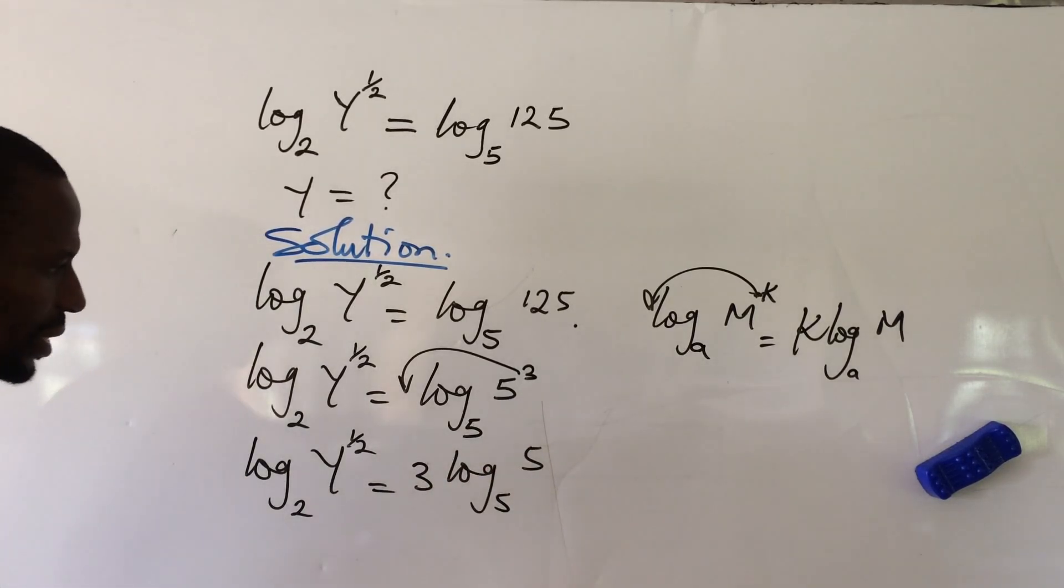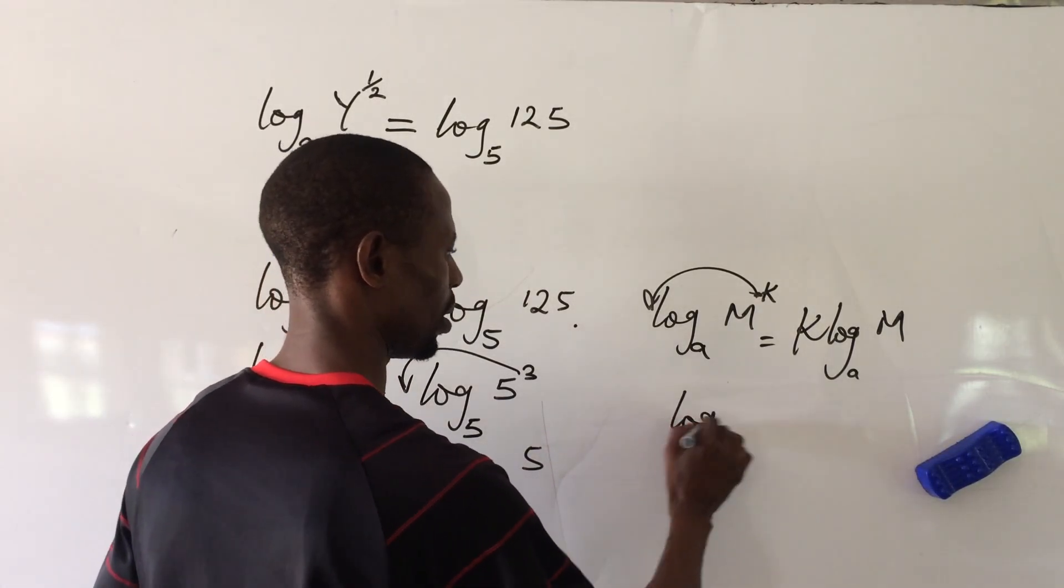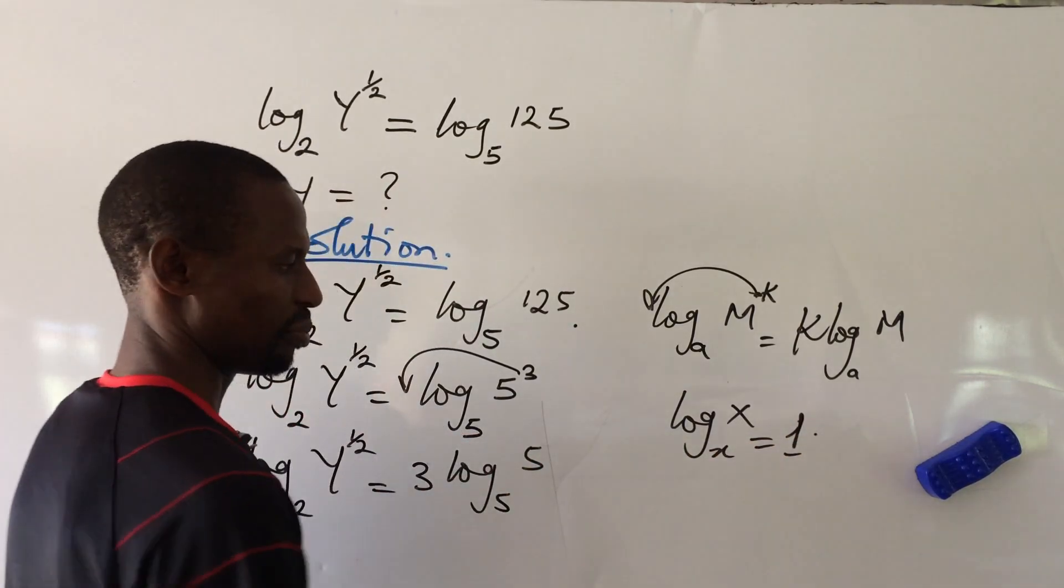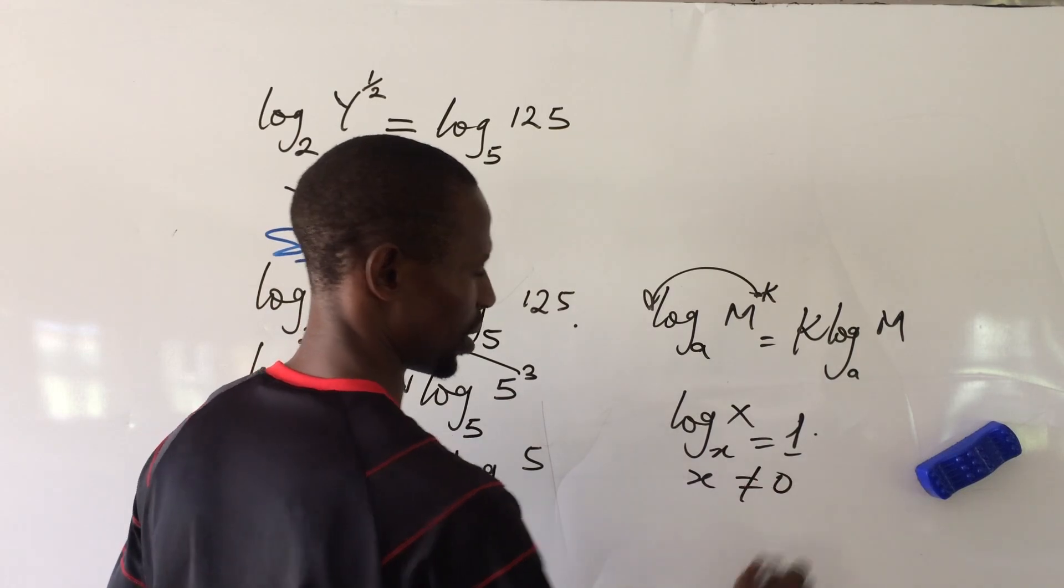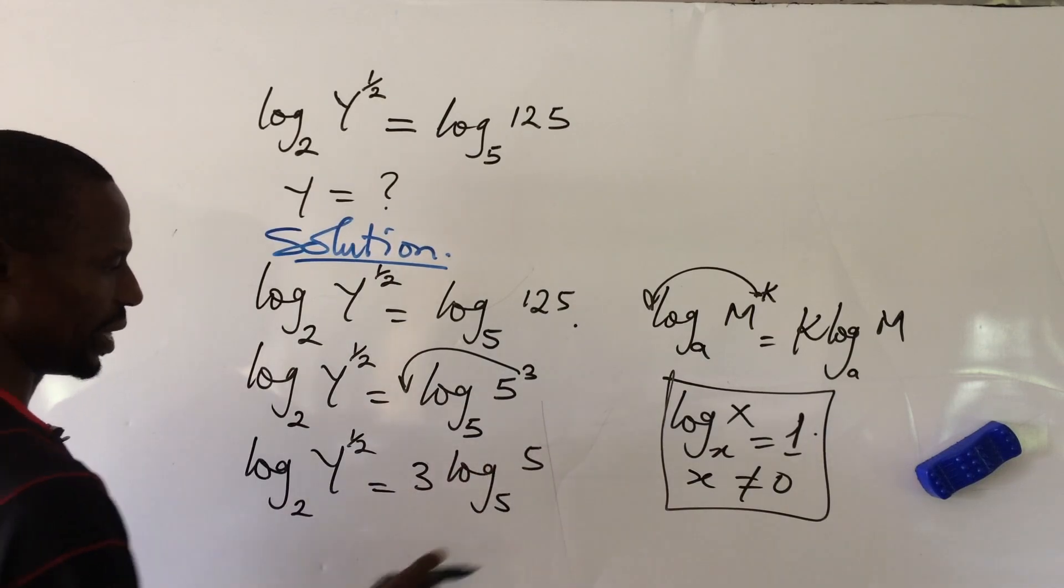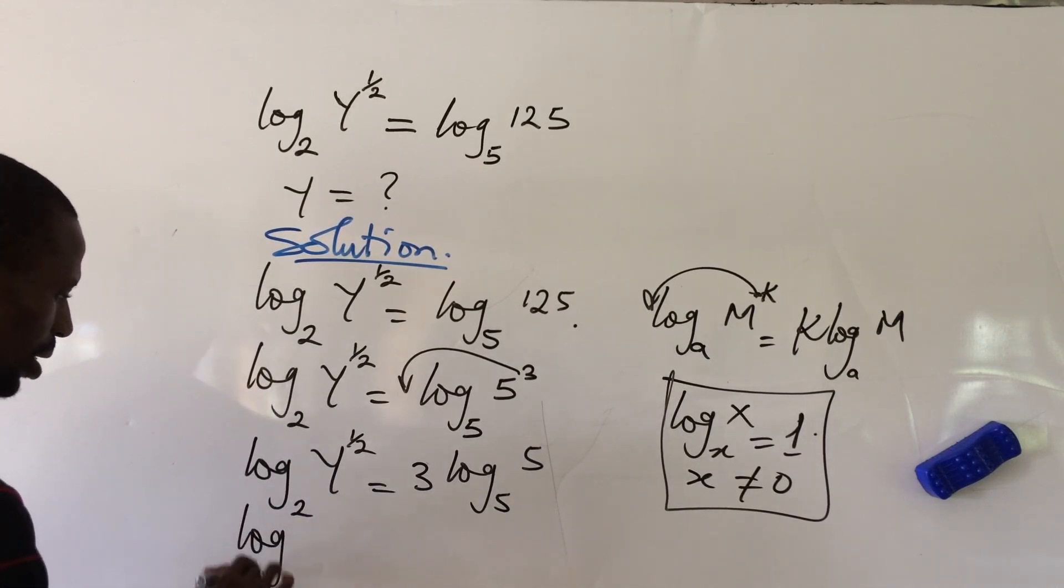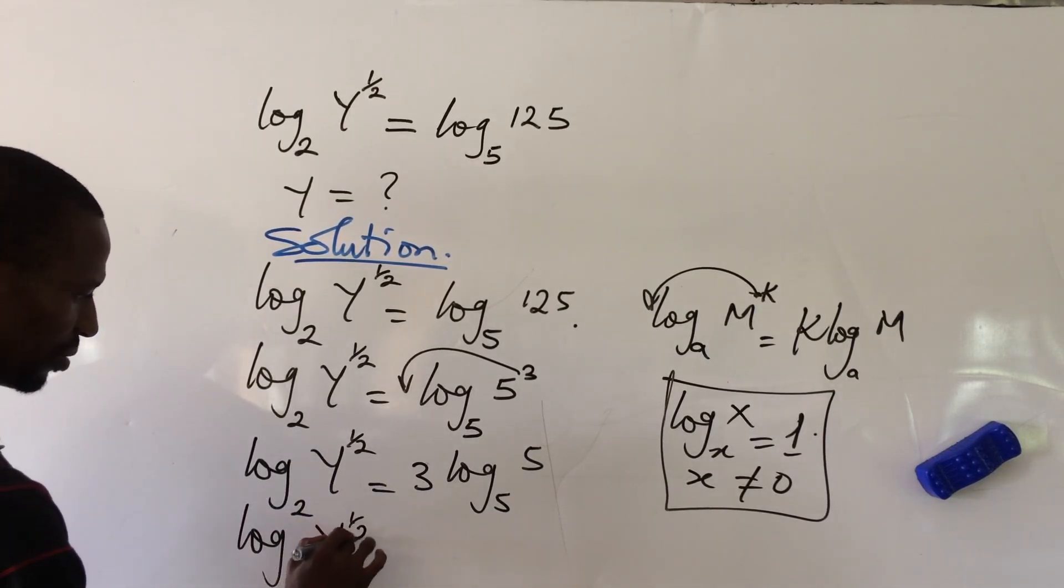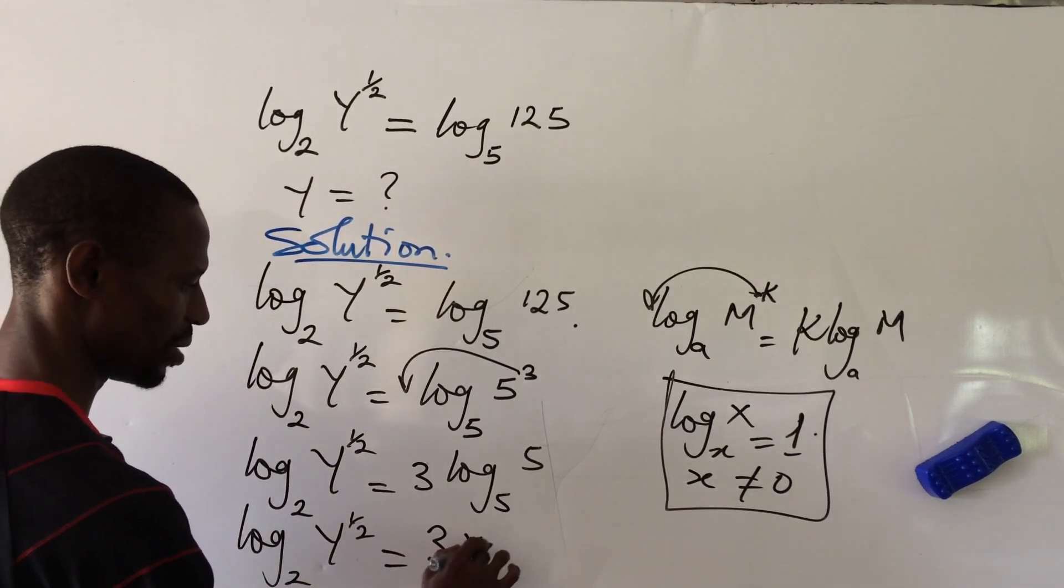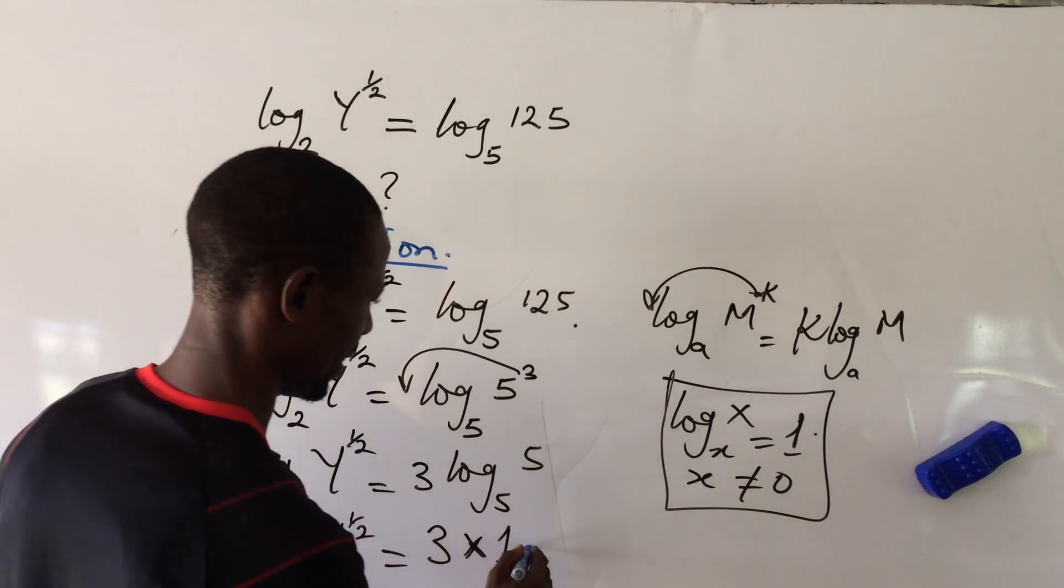Again, there's another law which says that log s base s equals 1, provided s is not equal to 0. So if we apply this again, log 5 base 5 will give us 1. And so we have log y to the power of 1/2 base 2 equals 3 times 1. Let's proceed on the other side again.